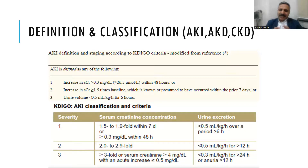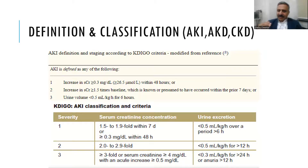Or a fall in urine output to less than 0.5 mL/kg/hour — which, if your weight is 100 kg, comes out to about 500 mL per day or less than 50 mL per hour of urine output. So fall in urine output, fall in GFR, rise in creatinine — and the limit is 0.3 mg/dL within 48 hours — is the definition of acute kidney injury.